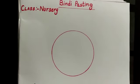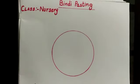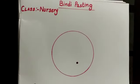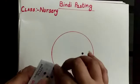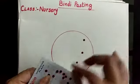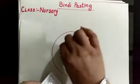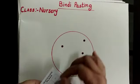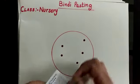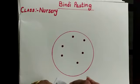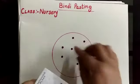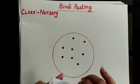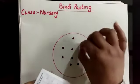Now take bindi and paste in the circle. Like this. Again and again. Paste bindi in the circle. Like this.